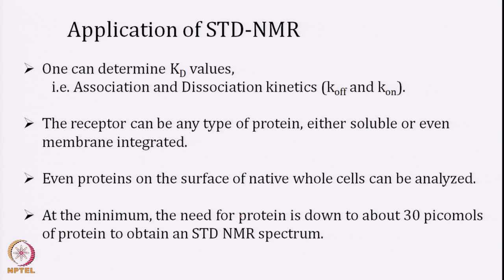What all can you do by Saturation Transfer Difference? You can determine the KD — dissociation constant — association constant, kinetics, K-off and K-on. You can investigate any type of receptor protein, either soluble or even membrane-integrated. Whether it is an integral membrane protein or a soluble protein, one can identify a ligand for that receptor. Even proteins embedded on the surface of whole cells can be analyzed by STD NMR. And one good thing is that you need very low protein concentration — just a few micromolar or even picomolar is good enough for obtaining the STD NMR signal.